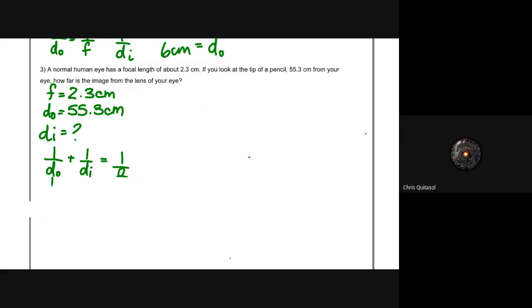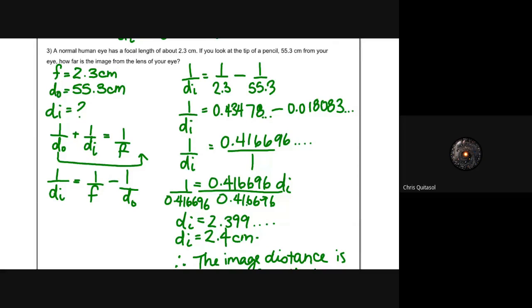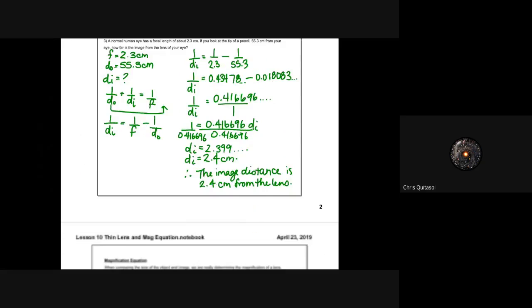We're trying to find the distance of the image, and we have all the necessary information to use the equation: 1/d₀ + 1/dᵢ = 1/f. We rearrange the equation to solve for 1/dᵢ, then substitute and solve. In this question I use decimal numbers since we were given decimals — that's fine. If given whole numbers, solve with fractions. Ultimately, we get the distance of the image as approximately 2.4 centimeters from the lens.